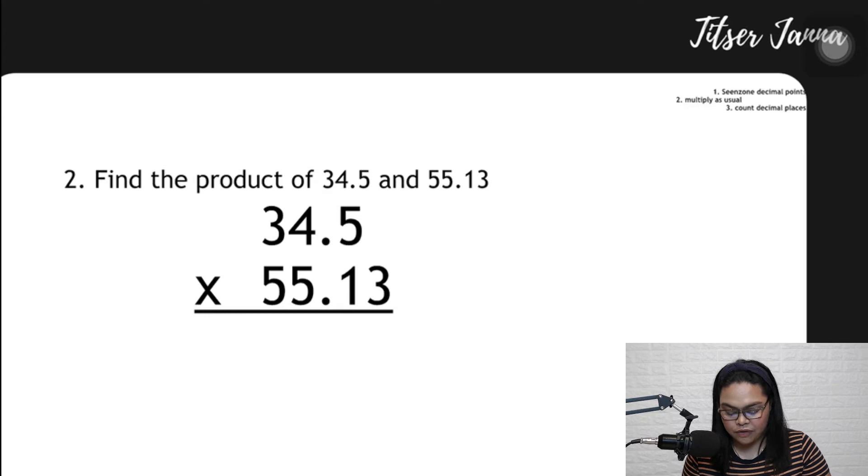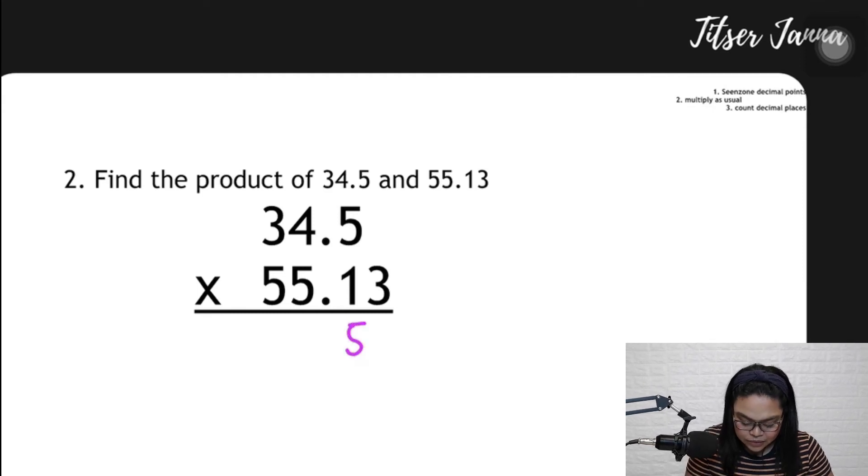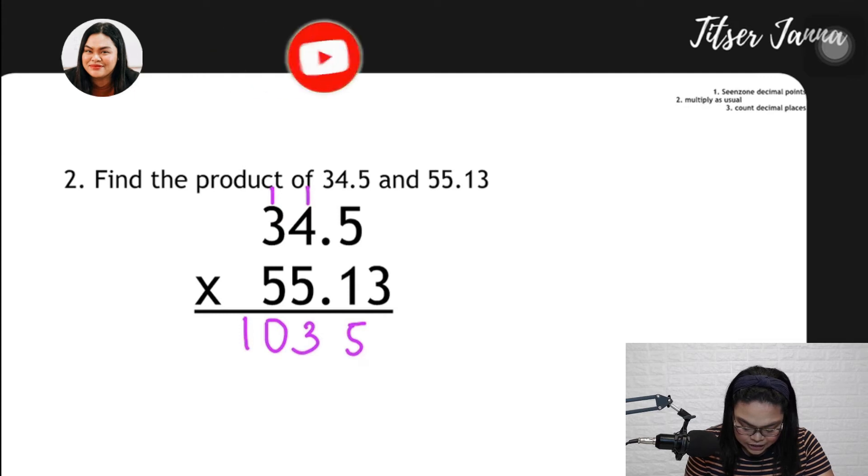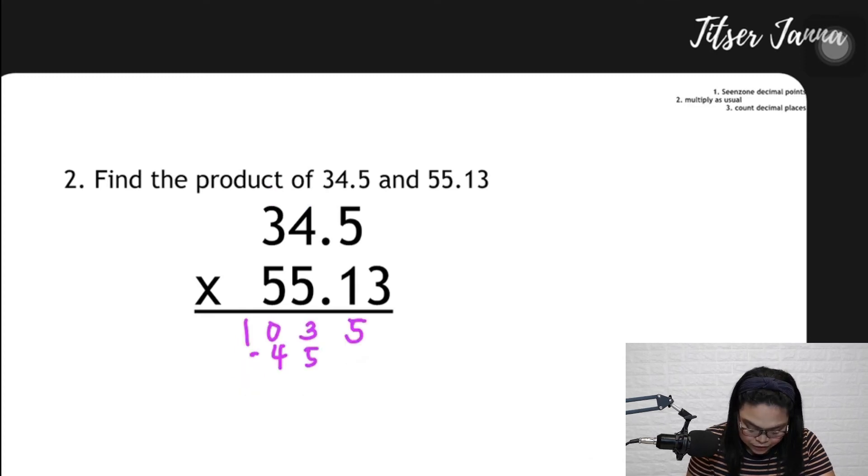Find the product of 34.5 and 55.13. Of course, we have to answer it as if there's no decimal point. So 3 times 5, that is 15. 3 times 4, 12 plus 1 is 13. 3 times 3 is 9, plus 1 is 10. 1 times 5, that is 5. 1 times 4 is 4. 1 times 3 is 3. I'll make my writing smaller. 5 times 5, 5, 4, 3. And we have here, 5 times 5 is 25. 5 times 4 is 20, plus 2 is 22. 5 times 3 is 15, plus 2 is 17.